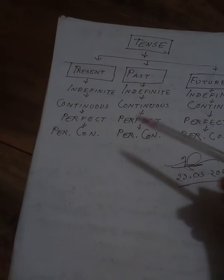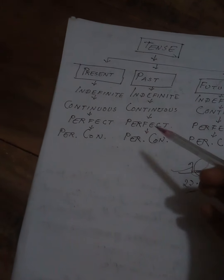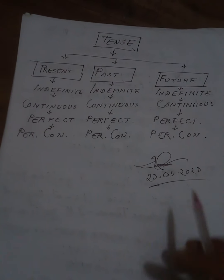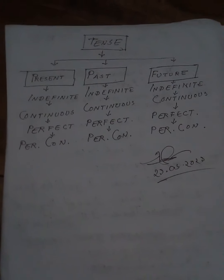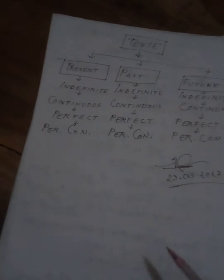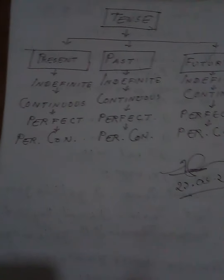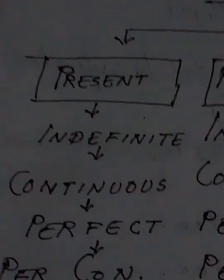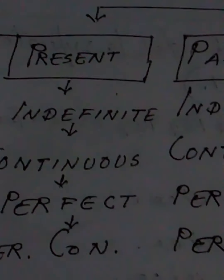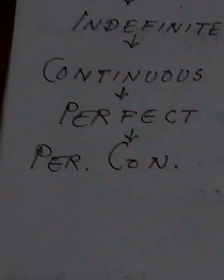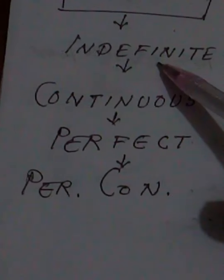So, in part one — tenses and its classifications — we've covered what tense is and some examples. Students, you should practice spelling at home. Now, present tense: if we keep it as present, it is present, and it is about present time. Under it we have indefinite, continuous, perfect, and perfect continuous.